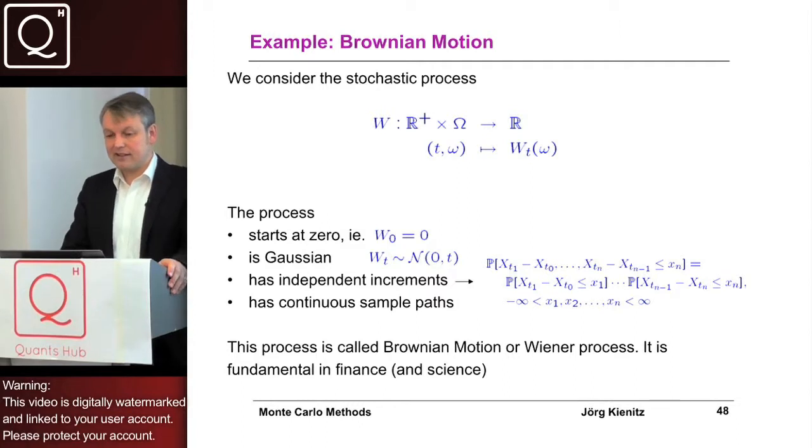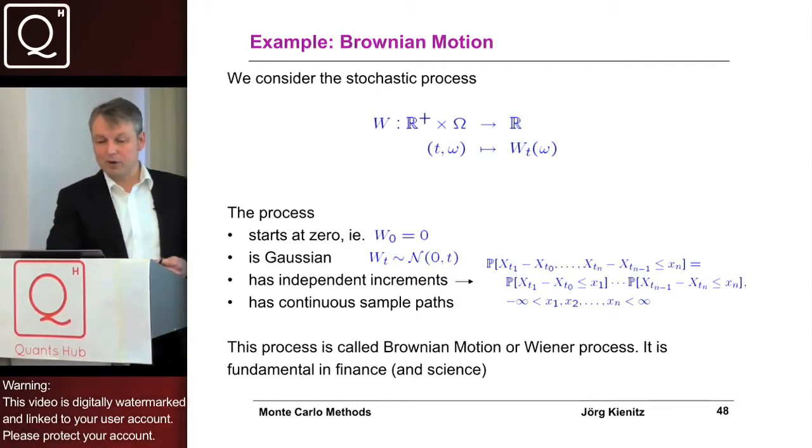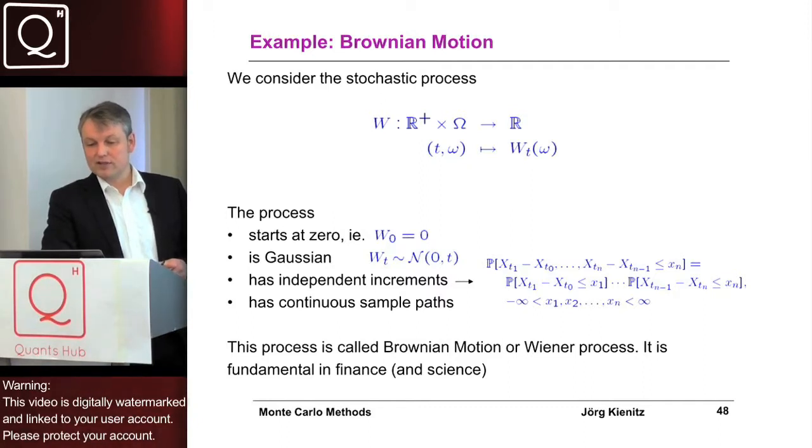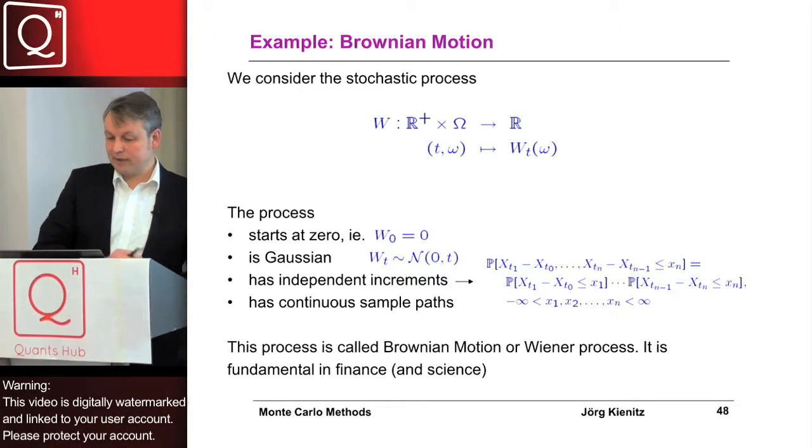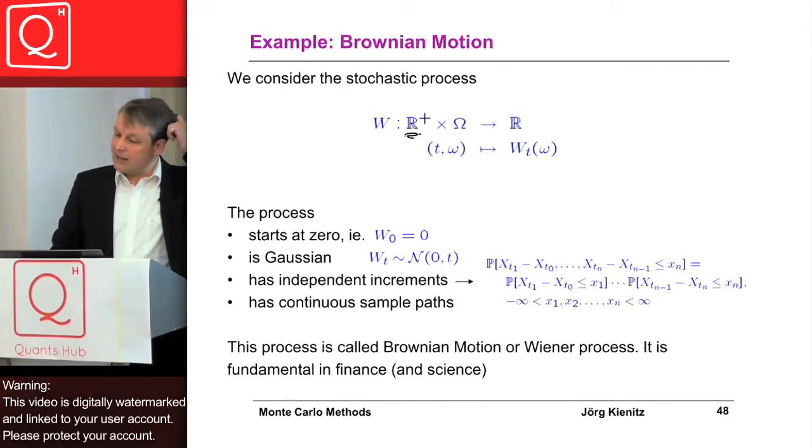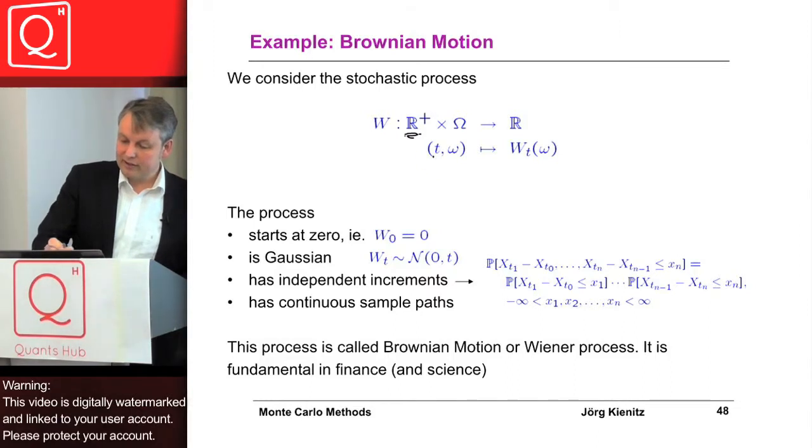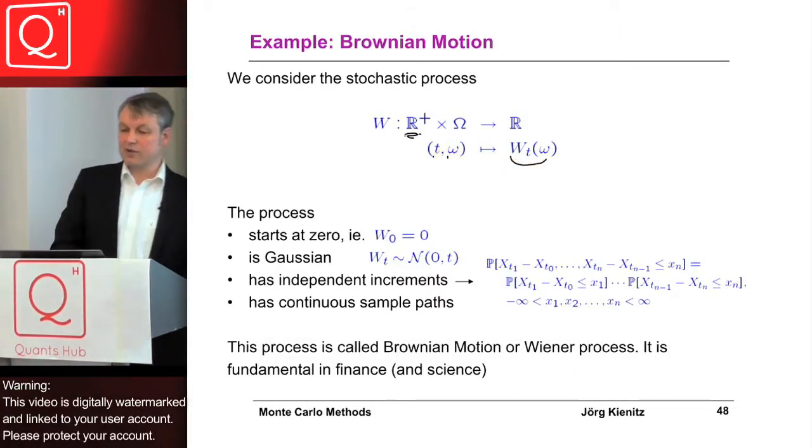Let me get started by considering Brownian motion. What is Brownian motion? It's a stochastic process from R plus to omega, or zero to T times omega to R. Whenever we have T and omega, it assigns a certain value to these two possible points.